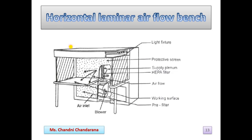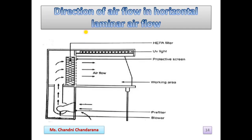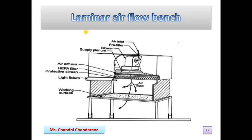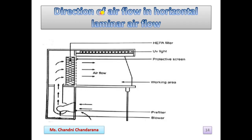There are two types: horizontal laminar air flow bench and vertical. In the horizontal laminar air flow bench, you can see the light fixture, HEPA filter, airflow, working surface, pre-filter, air inlet, and blower. In the horizontal laminar air flow, you can observe the HEPA filter, pre-filter from where air comes, then the airflow, followed by a protective screen, and the working area.